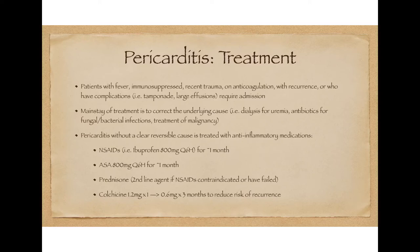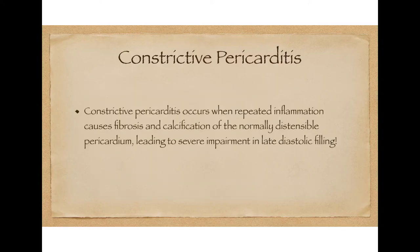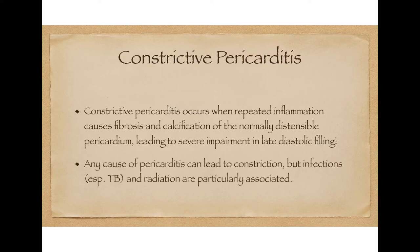Beyond simple pericarditis, we have an entity called constrictive pericarditis. This is when repeated or severe inflammation of the pericardium causes fibrosis and calcification of the normally distensible and compliant pericardium, leading to significant impairment in diastolic filling. Any cause of pericarditis can also lead to constriction, but infections such as TB and radiation are particularly associated with causing constrictive pathology.